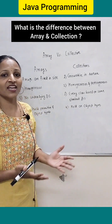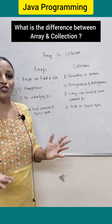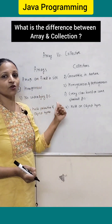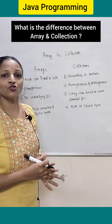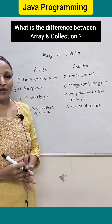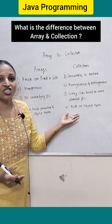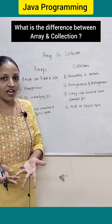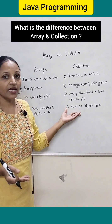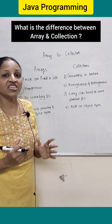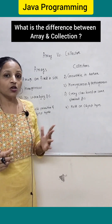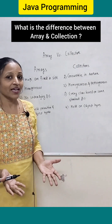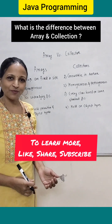Arrays can hold both primitive data types as well as object data type elements. But collections can hold only object types. For example, if you want to store an integer value in a collection, it must be stored in the form of an Integer wrapper class object, not as a primitive data type integer variable.